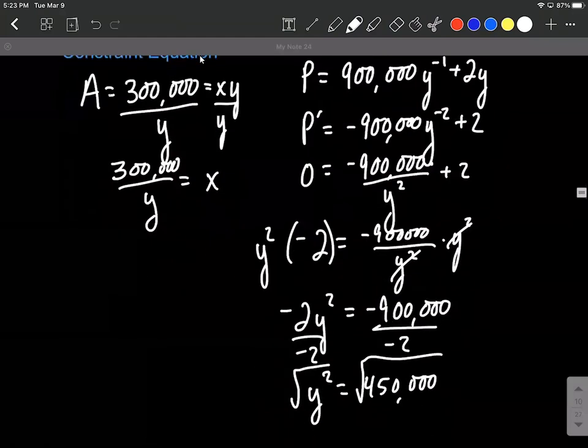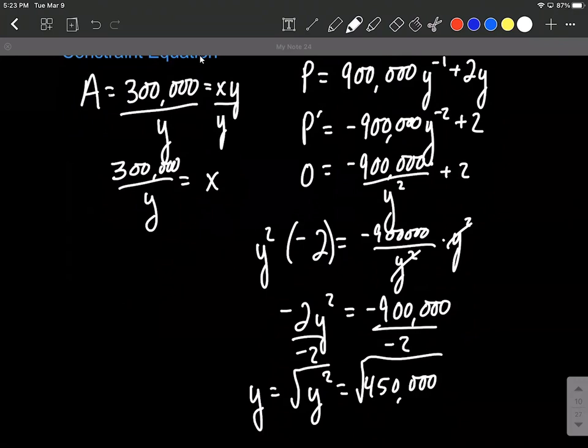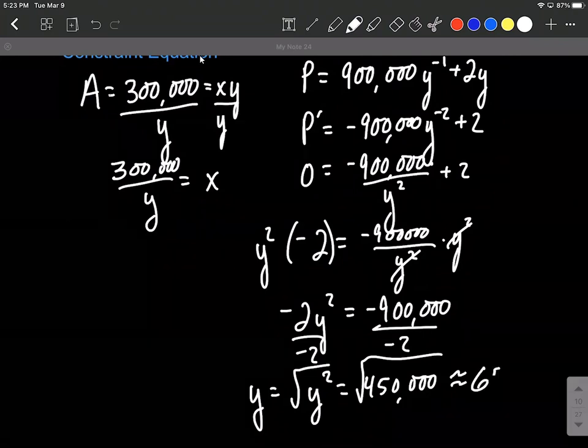So we could leave it as an exact answer. The square root of 450,000. Or if you're actually going shopping and building this fence, you may want to get an approximation. I got this to be 670.82 and that'll be in feet.